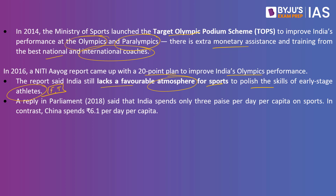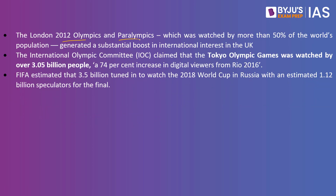A 2018 Parliamentary reply revealed that India spends only 3 paisa per day per capita on sports, while China spent 6.1 rupees per day per capita. Only when we pump in money will we be able to win medals and send a message about India's soft power to the global community. Mega sporting events like the London 2012 Olympics, watched by more than 50% of the world's population, generated substantial boosts in international interest.